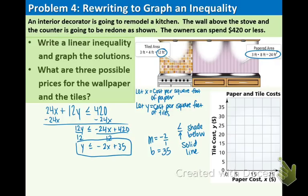So let's first plot the y-intercept which is 35 and now we're going to be going down 2 over 1 repeatedly.